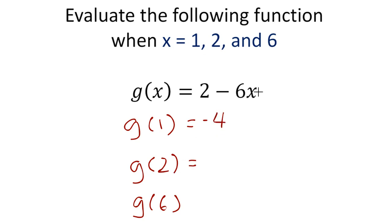g(2), if I plug in 2 for x, I get 2 minus 12. So g(2) is negative 10. And then when I plug in 6, I get 6 times 6. So 2 minus 36, that's negative 34. So the function g evaluated at 1 is negative 4. And evaluated at 2, it's negative 10. And when we evaluated at 6, it's just negative 34. So this is just another example of how we basically are just substituting these values in for x and figuring out what the function equals. And again, that's basically our y value for the graph.